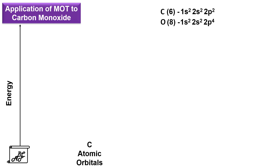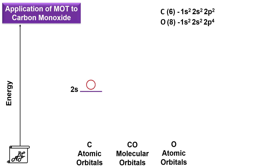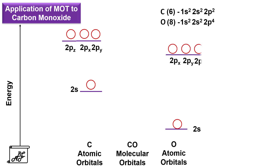On the left hand side we will have carbon atomic orbitals, on the right hand side oxygen atomic orbitals, and at the center the carbon monoxide molecular orbitals. The valence orbitals of carbon are 2s and 2p — that is 2s, 2px, 2py, and 2pz. Oxygen also has 2s and 2p orbitals, but since oxygen is more electronegative, the energy of its orbitals is lower compared to those of carbon. As we have learned in an earlier video, mixing of orbitals occurs in boron, carbon, and nitrogen.